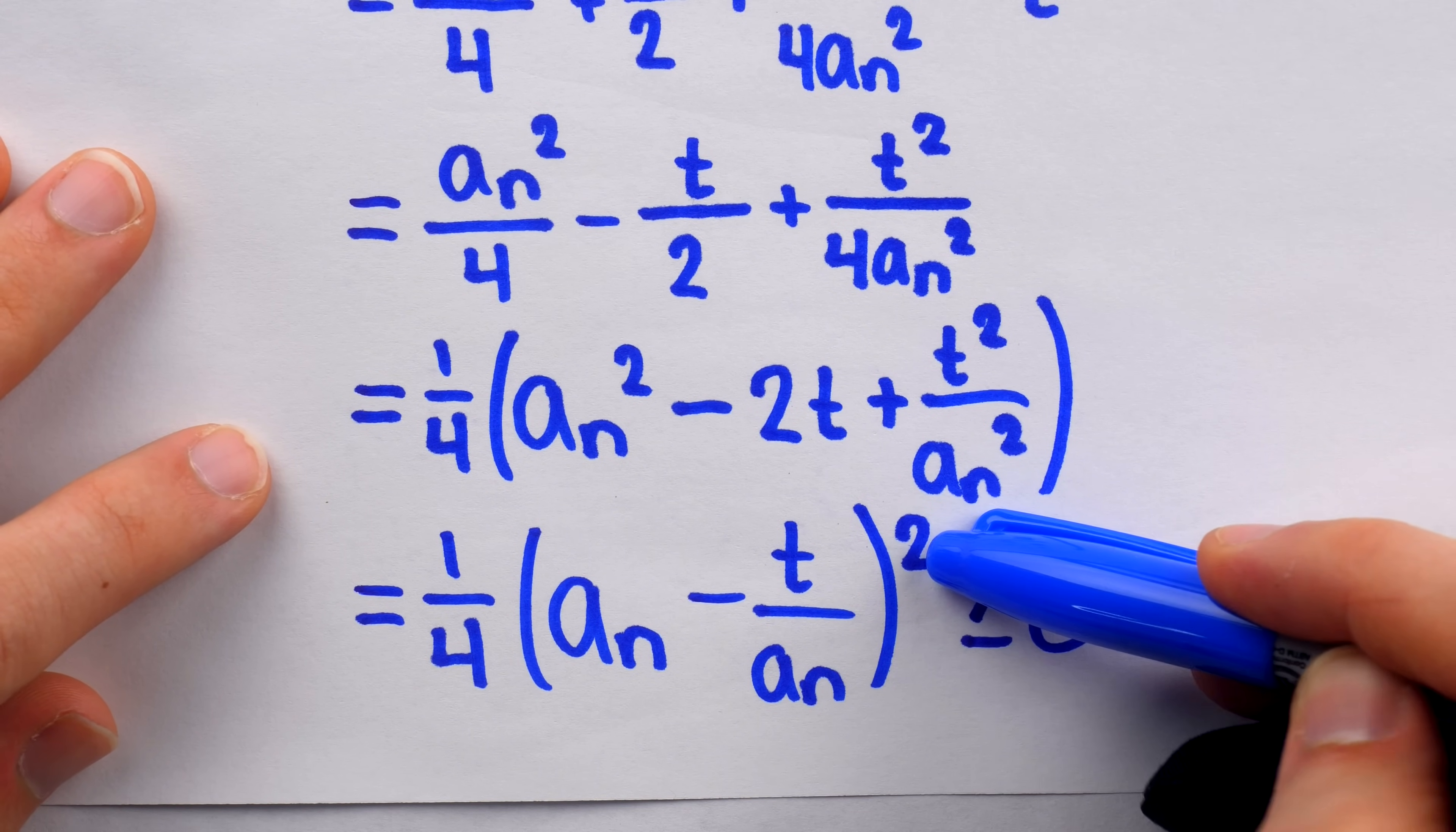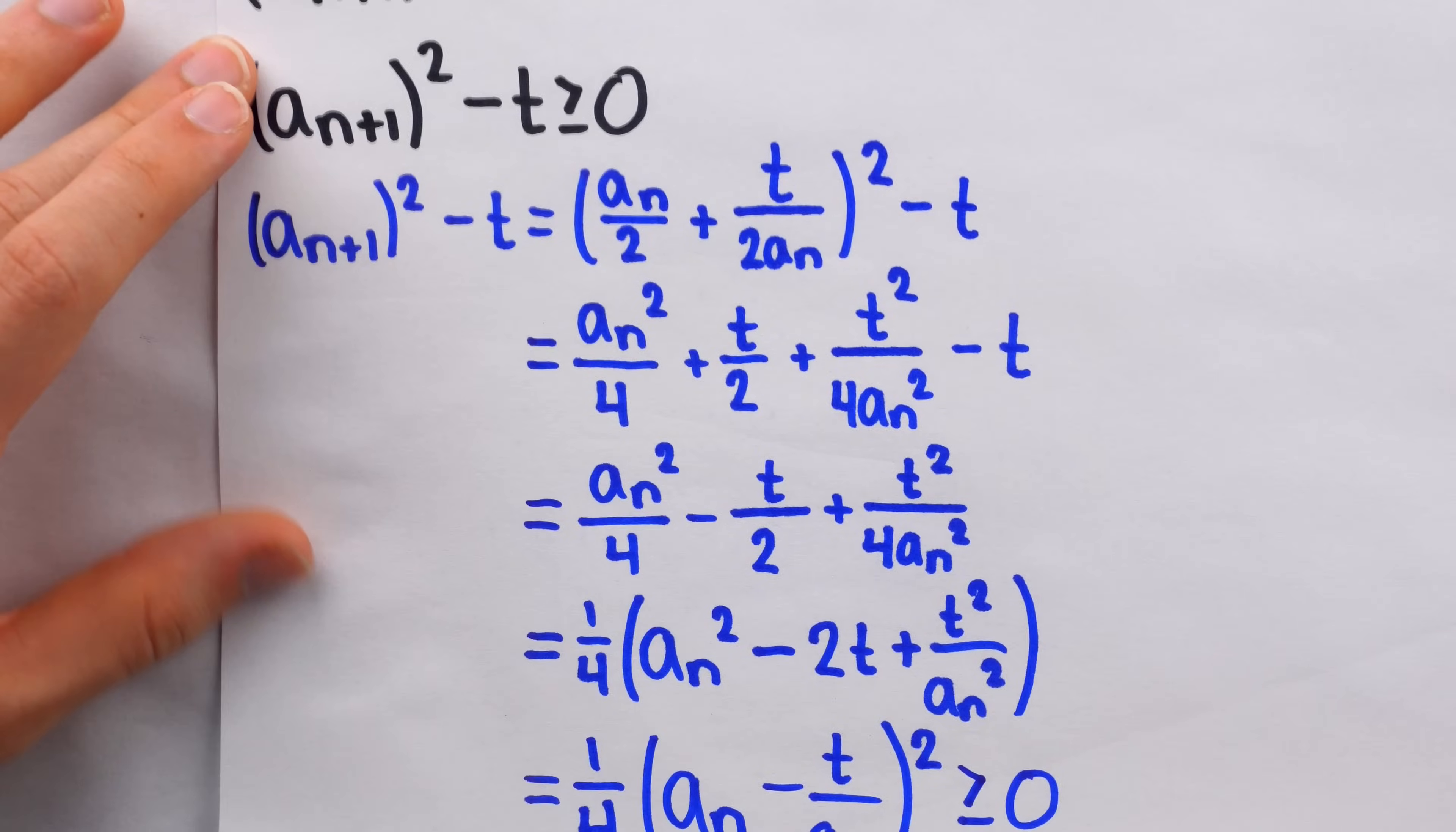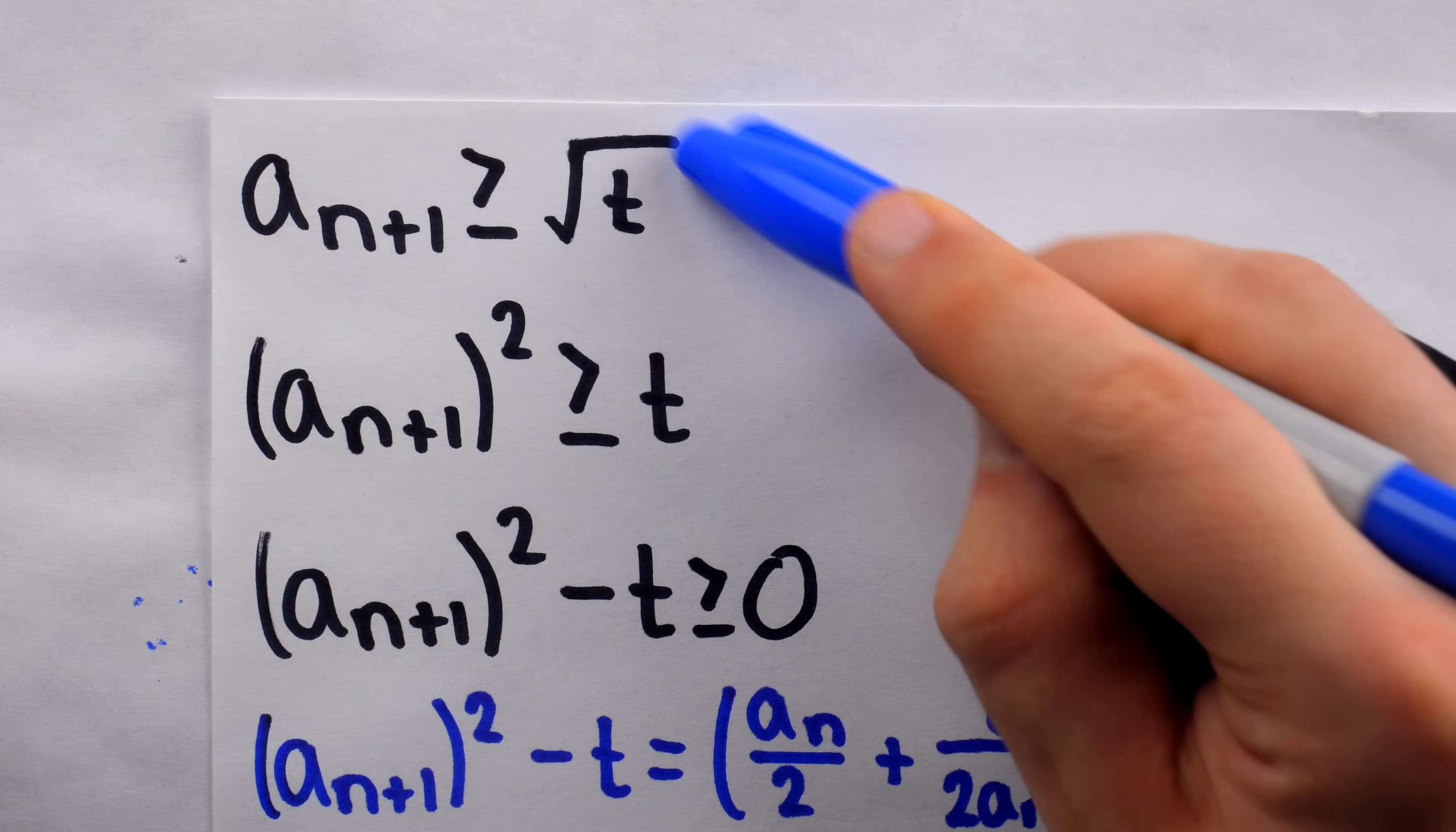We know that because this is squared. And, of course, any square is non-negative. Multiply it by a fourth, it's still non-negative. Hence, we've shown that this difference is greater than or equal to 0. And so, we have proven this inequality, which is equivalent to this one, which is equivalent to this original one we wanted to prove. Indeed, our sequence is bounded below by the square root of t.